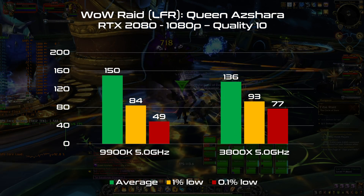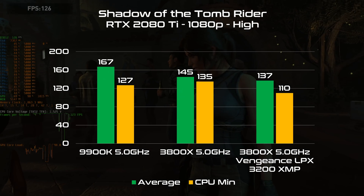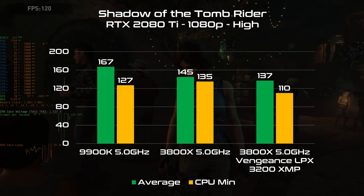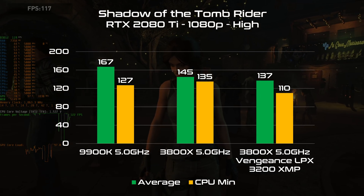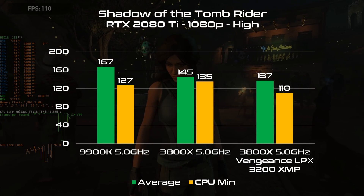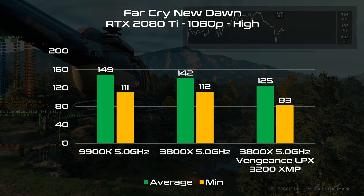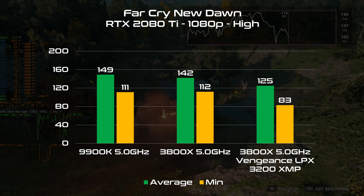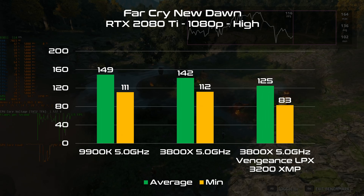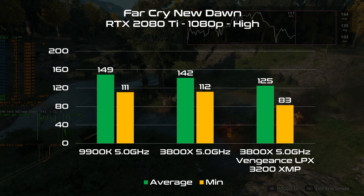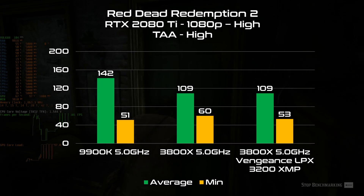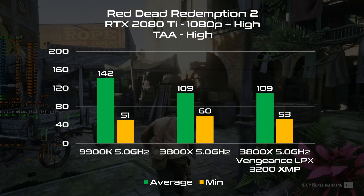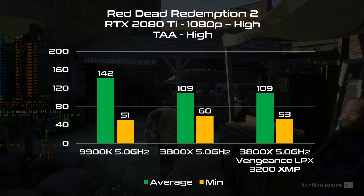Benchmark slides showing results across memory configurations: Corsair Vengeance LPX 3200 MHz C15 at XMP, and the G.Skill kit at 3733 MHz C14 with manual subtimings, across multiple test scenarios.